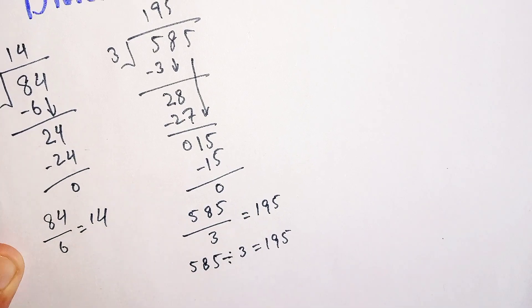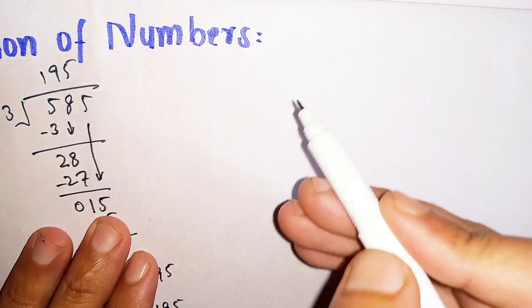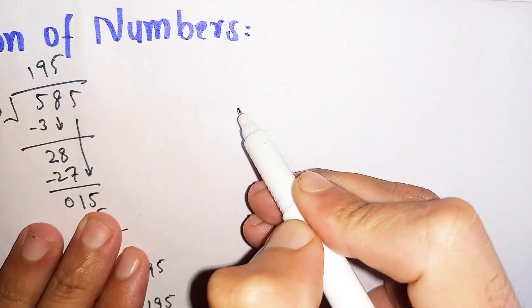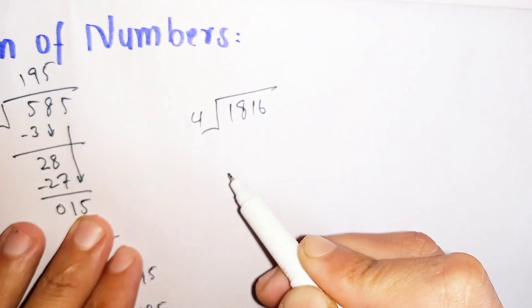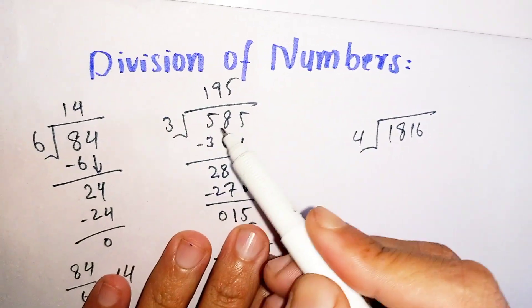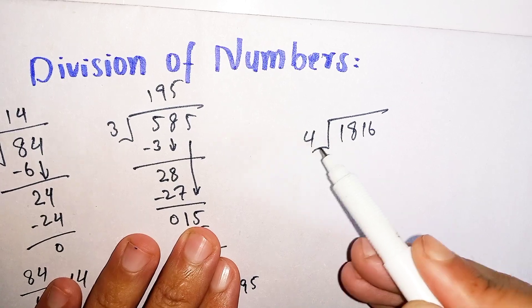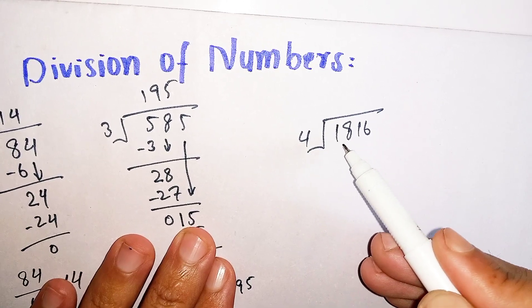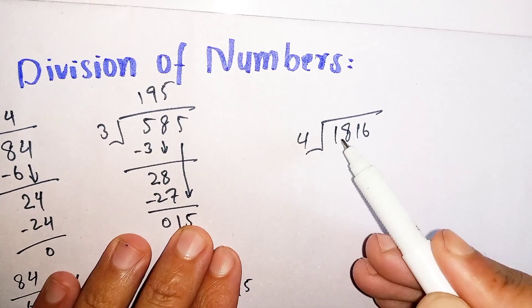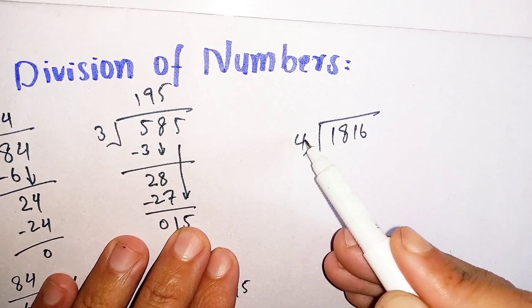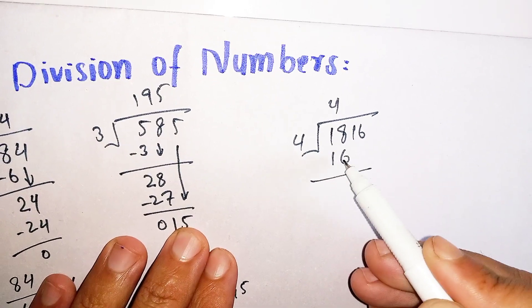Here is another example in which we are dividing a 4-digit number by a 1-digit number. We are dividing 1816 by 4. We cannot divide the first digit by 4, so we combine the first and second digits: 1 and 8 becomes 18. How many times does 4 go into 18? 4 times 4 is 16. Subtract 16 from 18, the remainder is 2.